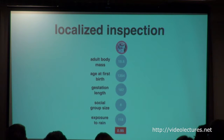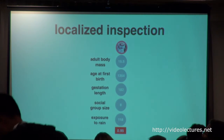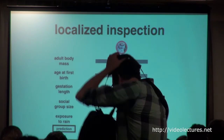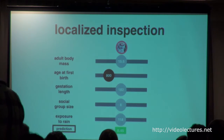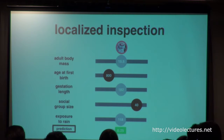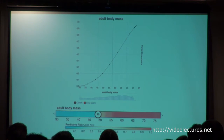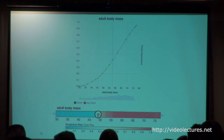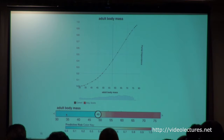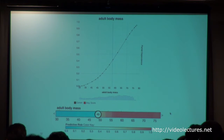For localized inspection, we have a particular primate with a bunch of features, and we want to turn each of those features into a slider. Users can tweak different values — for example, drag down the age of birth for a particular primate to see how the model responds. The prediction goes down. Or drag up the social group size and see how the prediction is affected. We compress the partial dependence plot into these scented sliders where blue means low risk and red means high risk, giving you a clue that dragging left lowers risk.